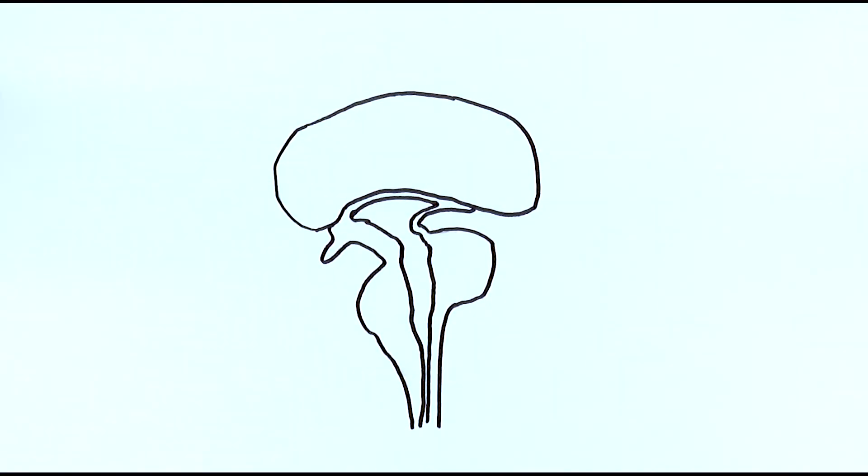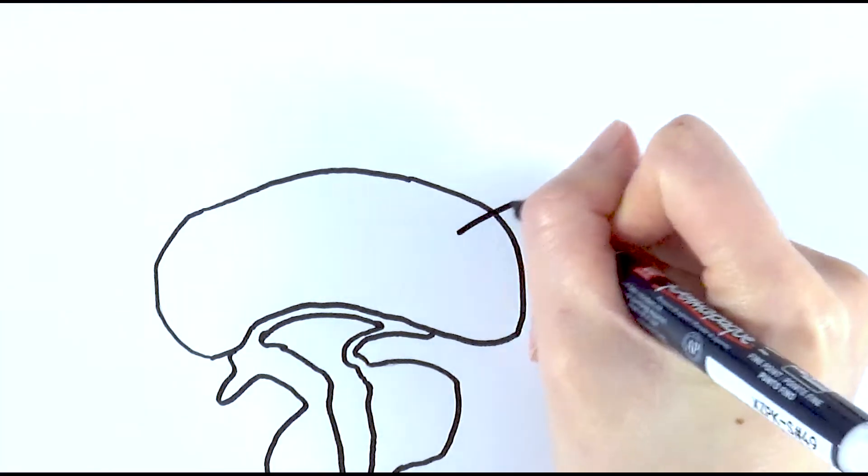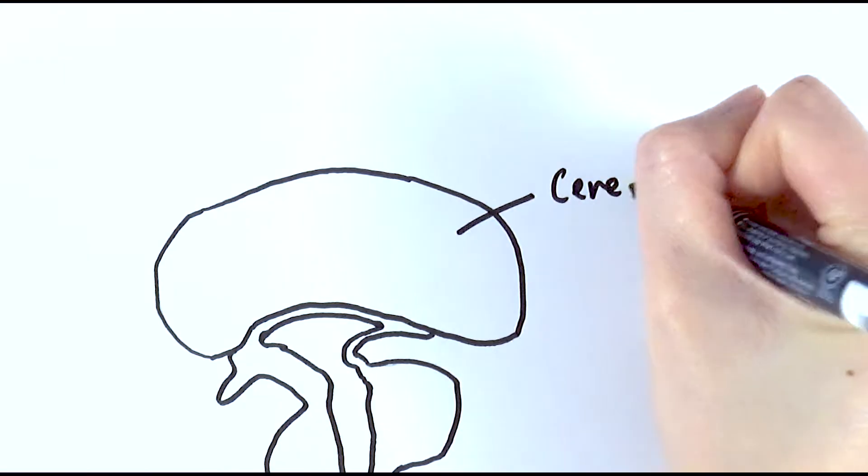In this video we'll be looking at the structure of the brain and how different parts of the brain actually work. So first of all we'll start with the major part, obviously the cerebrum.